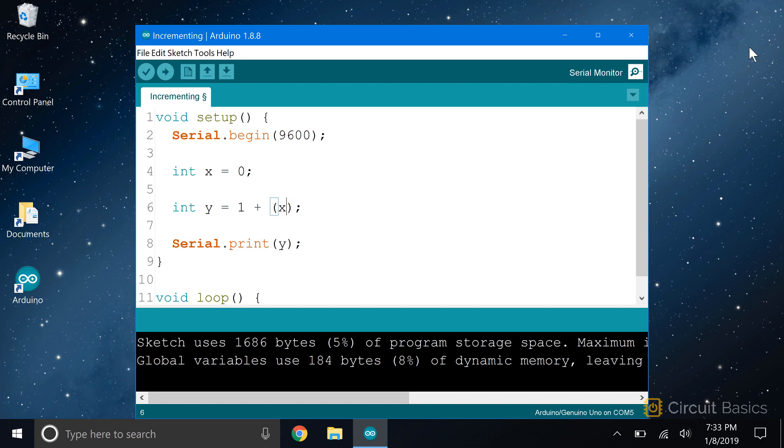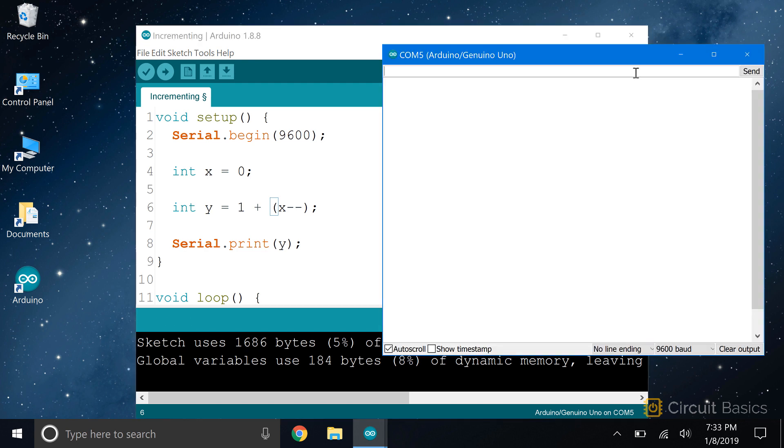If I change this to x minus minus and upload the sketch, you can see that y now equals 1. Since the original value of x was used in the formula, it becomes y equals 1 plus 0, which is 1.